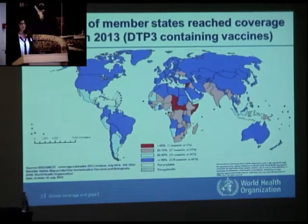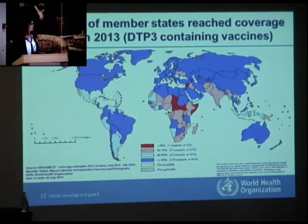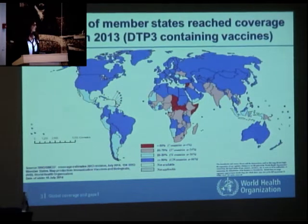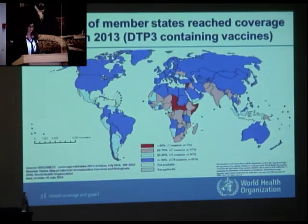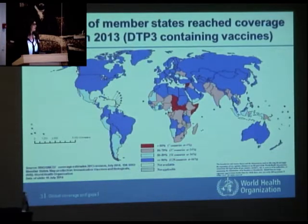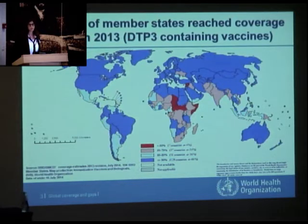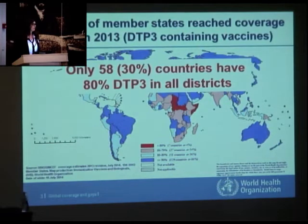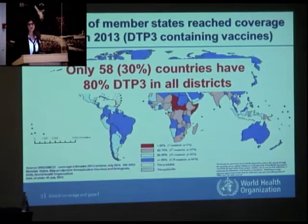Looking at how coverage is distributed over the 194 WHO member states, the dark blue shows countries where national coverage was already reached in 2013, represented by three doses of DTP-containing vaccines. About 66% of member states reached the targeted 90% national coverage. However, seven countries cannot even reach 50% of their infants with three doses of basic vaccinations. The global goal is not only 90% at national level, but also 80% coverage in each district. Currently in 2013, only 58 member states — 30% — have reached 80% coverage in all their districts.